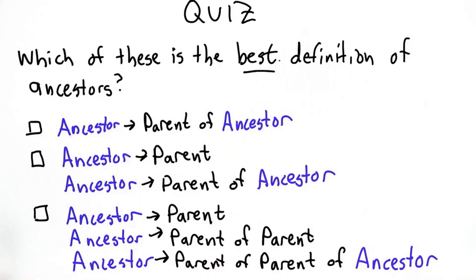So the question is which of these is the best definition of ancestors. And there's three choices. The first has one rule, ancestor is replaced by parent of ancestor.